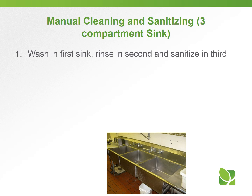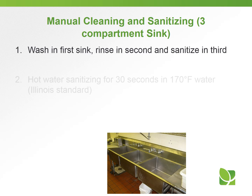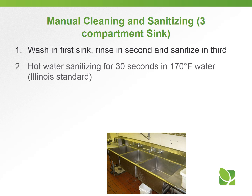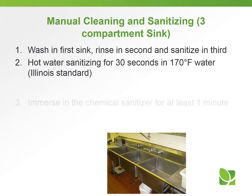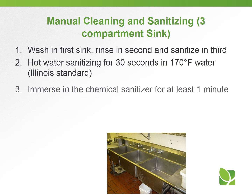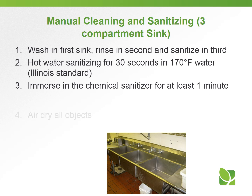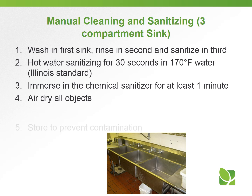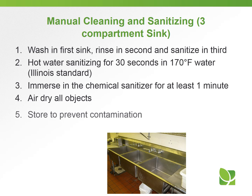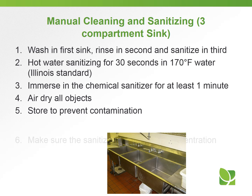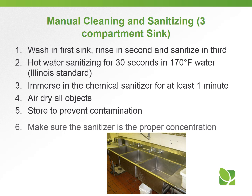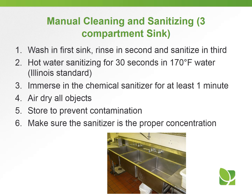For three-compartment sink cleaning and sanitizing: the first step is to wash in the first sink, rinse in the second, and sanitize in the third. Hot water sanitizing requires 170-degree water for 30 seconds. Immerse in chemical sanitizer for at least one minute. Air dry all objects and store to prevent contamination. Make sure your sanitizer is at the proper concentration.